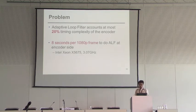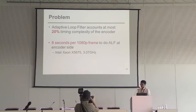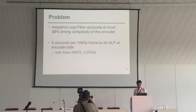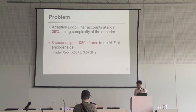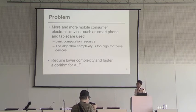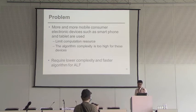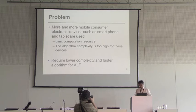From HEVC meeting documents, we know that adaptive filter accounts for almost 20% of timing complexity at the encoder side, which is larger than many other coding tools such as SAO and deblocking filters. We ran an experiment using a 3 GHz CPU and found that for a single 4K HD frame, we need 8 seconds to run adaptive filtering, which is not real-time. Since more and more mobile consumer electronic devices such as smartphones and tablets are widely used today, and these devices have only limited computation resources, the current adaptive filter complexity is too high for these devices. Therefore, we require a lower complexity and faster algorithm for adaptive filter in HEVC.